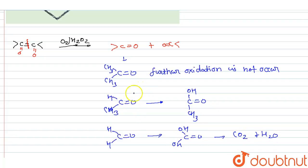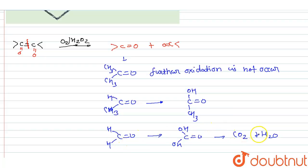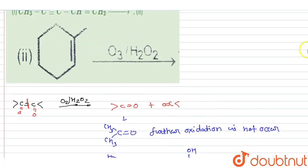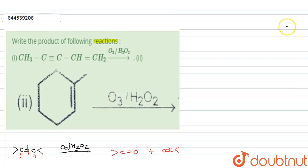If a ketone is present then further oxidation does not occur. If acetaldehyde is present then it converts into formic acid. If formaldehyde is present then it converts into CO2 and H2O. So now we have to draw the product of each reaction.